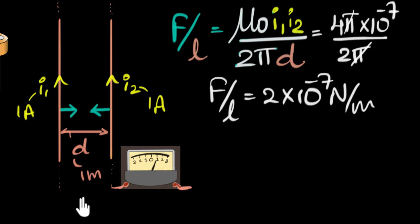So what's the definition of an ampere? An ampere is that current, which when flows through two long straight wires kept one meter apart in vacuum, attract each other with a force per unit length of two times 10 to the power minus seven newtons per meter. And this, my dear friends, is how we define an ampere and build a scale for measuring current.